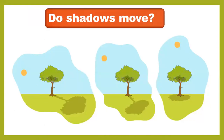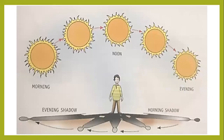Shadows move because the Earth is moving and spinning around the sun. Here are the different timings: this is the morning, this is the evening, and this is the noon time.